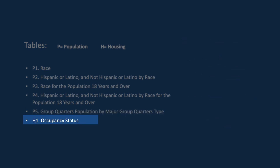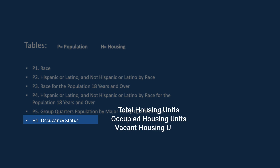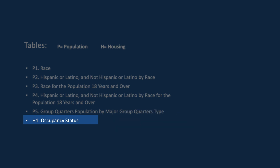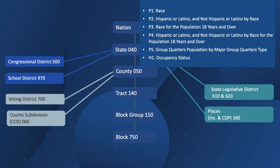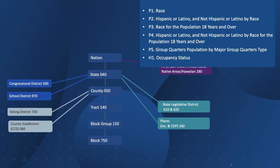The H1 table presents occupancy status. This table includes total housing unit counts as well as counts of occupied and vacant housing units. Redistricting data are available for these data tables at each of the common geographies you see here. When you combine an available subject from the tables with an available geography, you can get race data for your county or occupancy data for your voting district, for example.